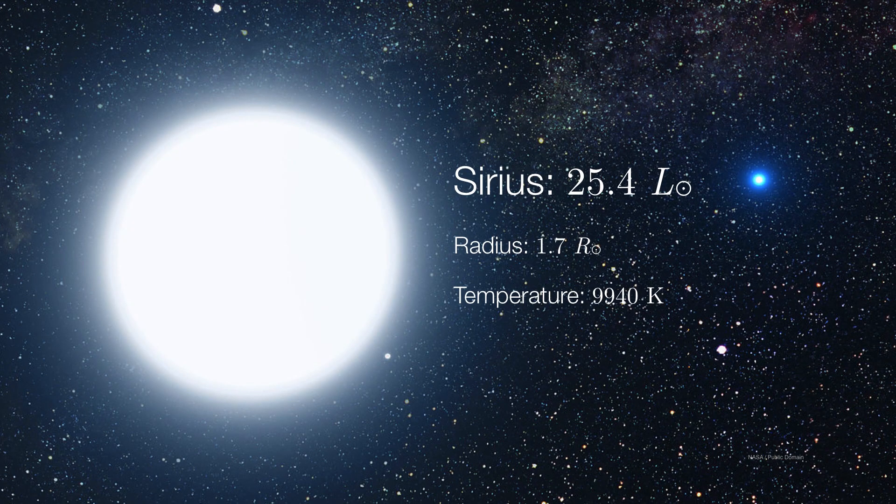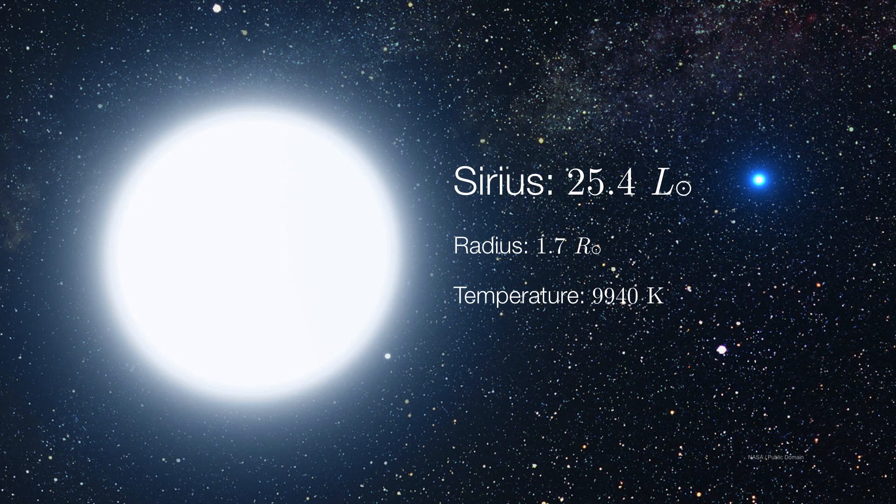But compare that to Sirius, that has a luminosity of over 25 times the sun's luminosity. But what really drives the luminosity of Sirius is its temperature. At almost 10,000 Kelvin, it is nearly twice the temperature of the sun.